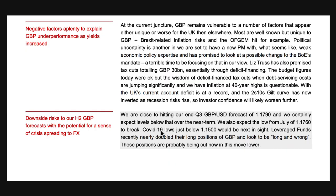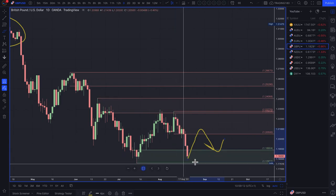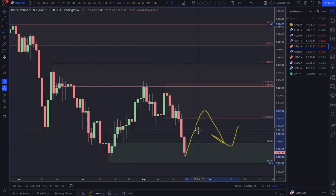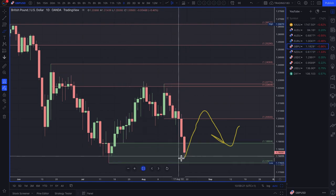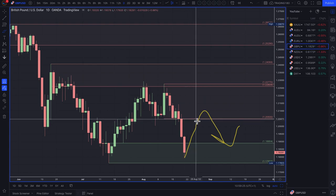A MUFG report from August 19th said there are downside risks to their second-half pound forecast, with the potential for a sense of crisis spreading to FX. They were close to hitting their Q3 pound/dollar forecast of 1.1790 and expect levels below that in the near term. They expect the July low of 1.1760 to break, with the COVID lows just below 1.15 as the next level in sight. Leveraged funds recently doubled their long positions on pound and are looking long and wrong — those positions are probably being cut in the move lower.